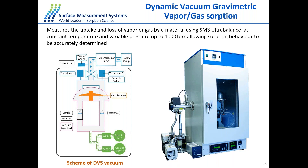The DVS Vacuum measures the uptake and loss of vapor by material using a balance at constant temperature and variable pressures up to 2,000 Torr, allowing the adsorption behavior to be accurately determined. On the right-hand side, we have a picture of the DVS Vacuum analyzer; on the left-hand side is the schematic of the DVS Vacuum.